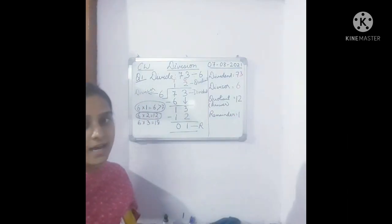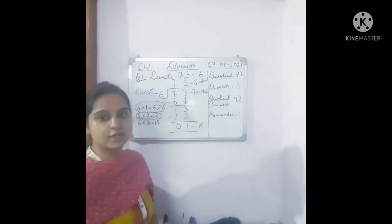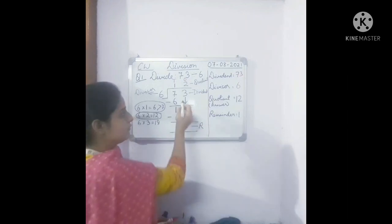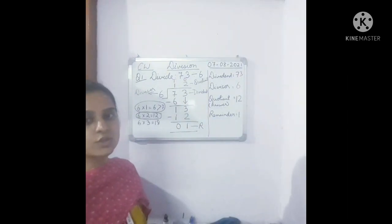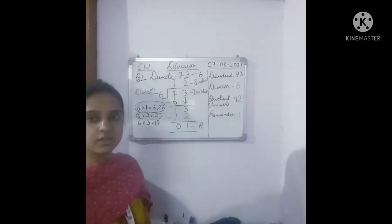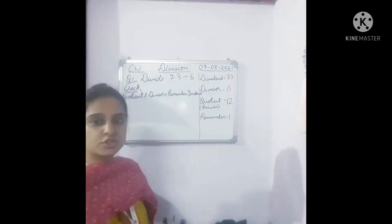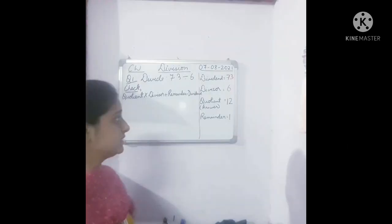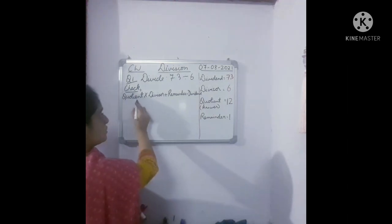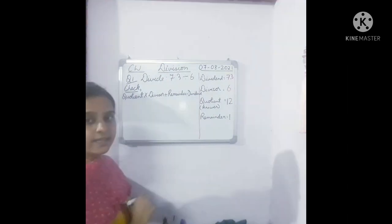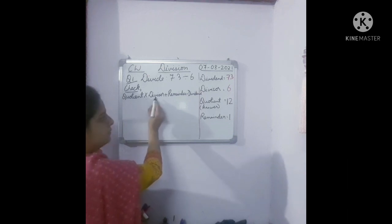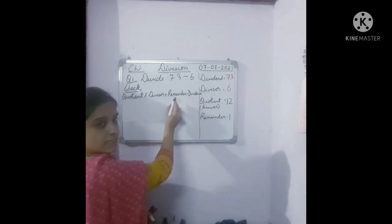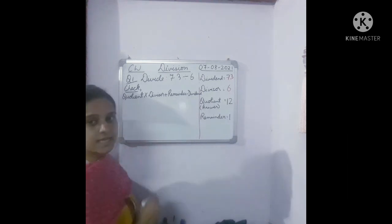Now children, let's check the answer — whether our answer is right or not. If we get the dividend back, that means our answer is correct. The formula for checking the answer is: quotient multiplied by divisor plus remainder is equal to dividend.